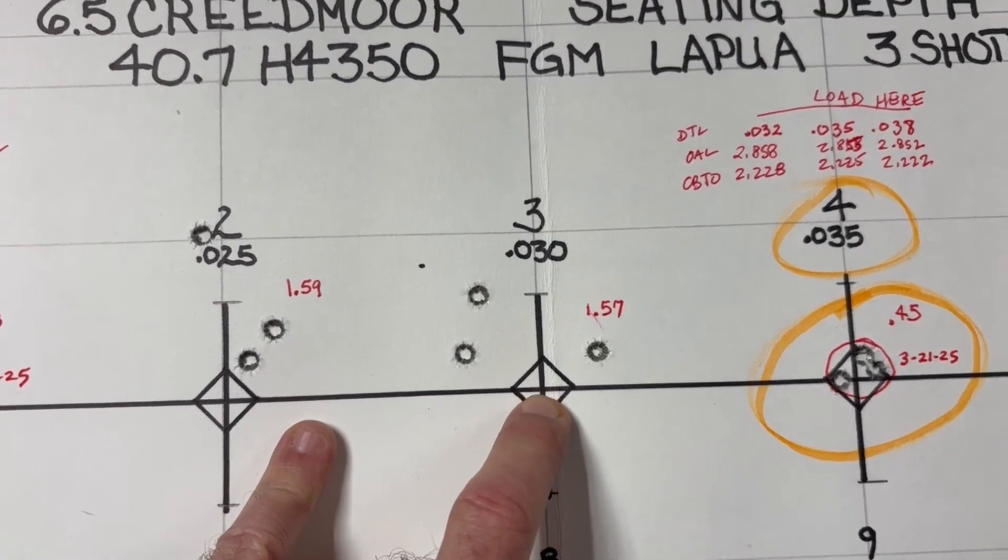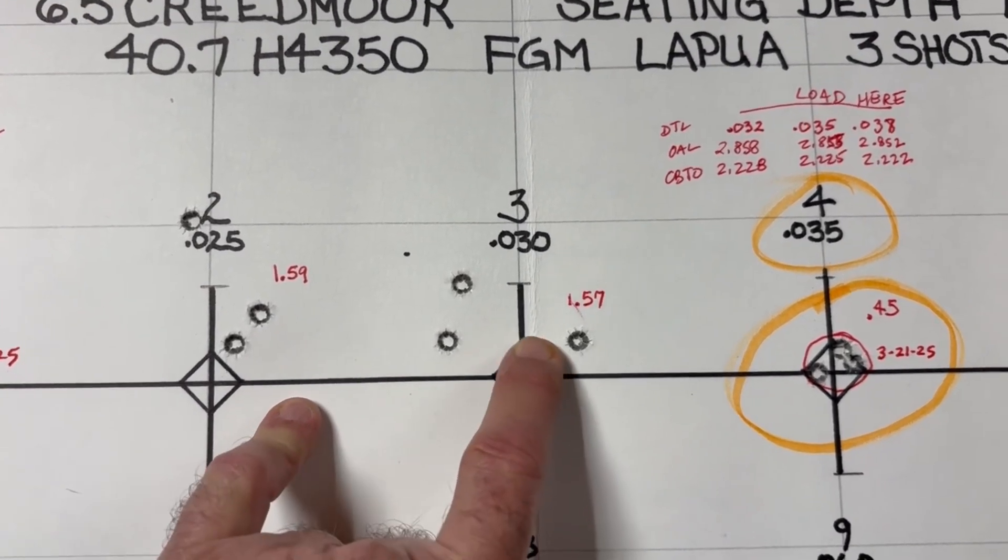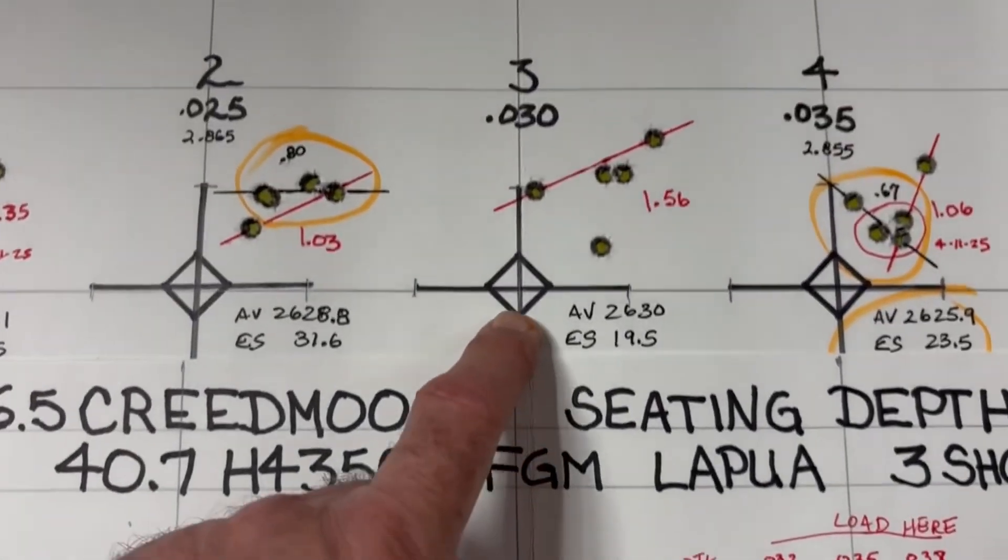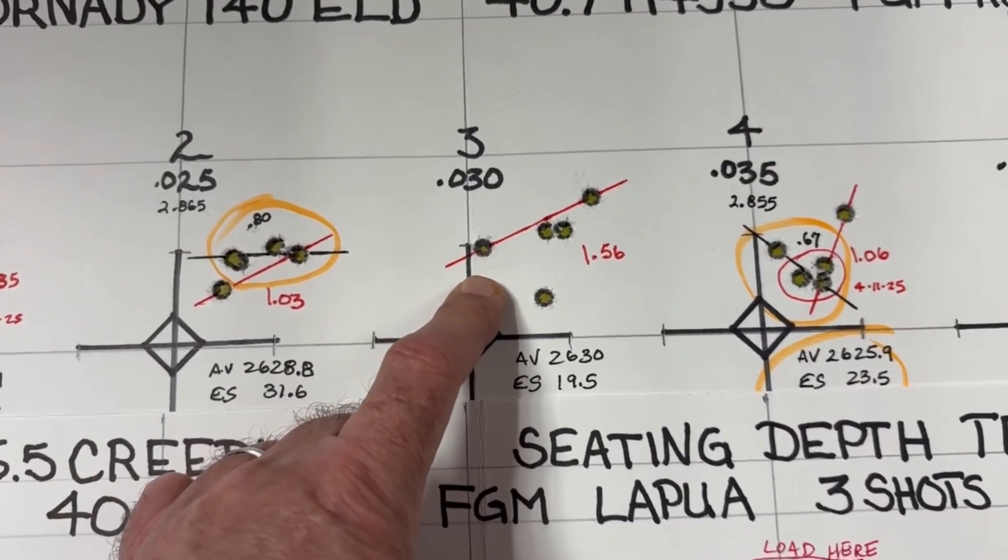So, for example, here, target number three, three weeks ago at 0.30, we were at 1.57. Today, we're at 1.56.